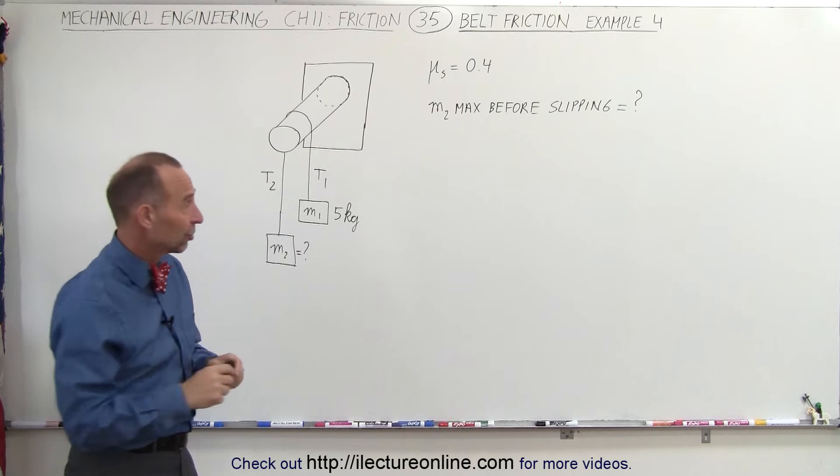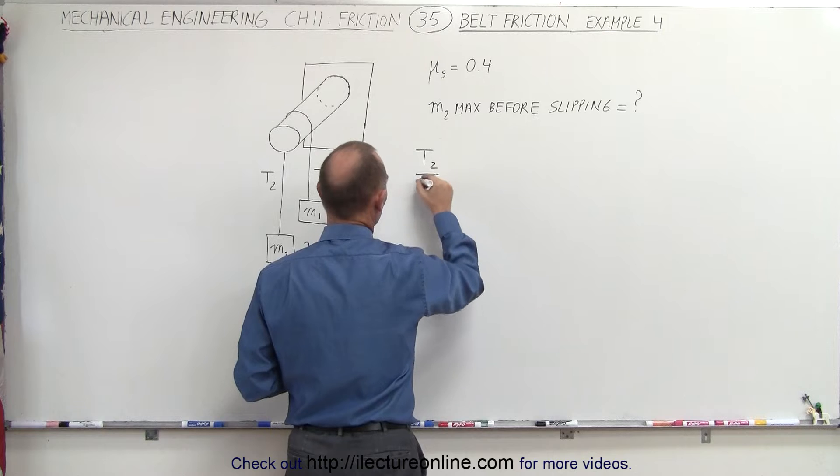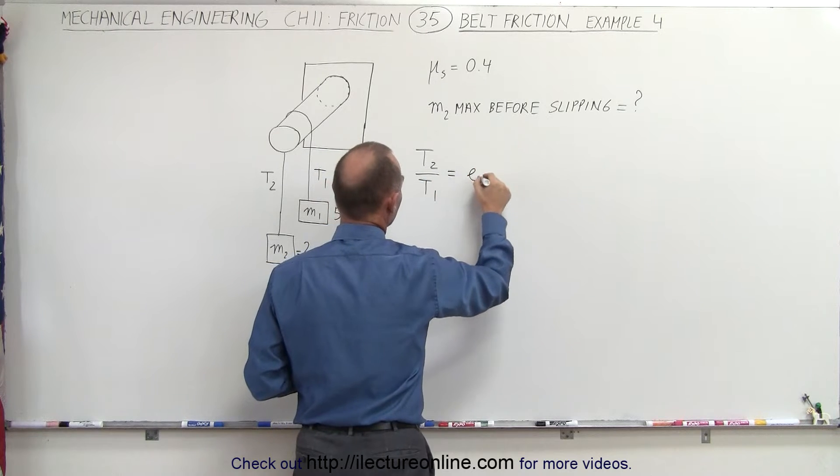Well what we need to do here is again start with the same equation that t2 over t1 is equal to e to the coefficient of static friction times the angle of wrapping.